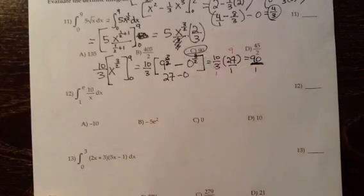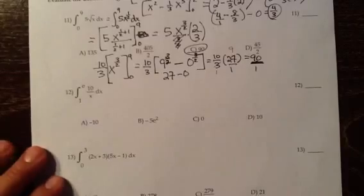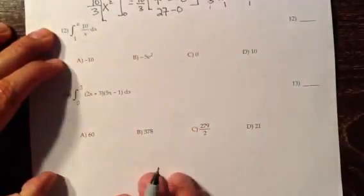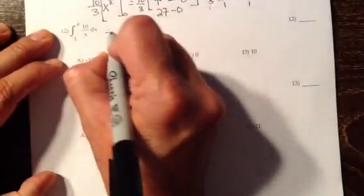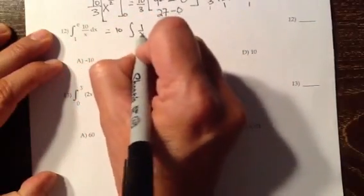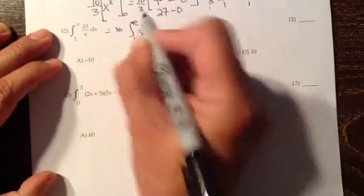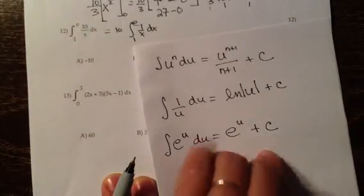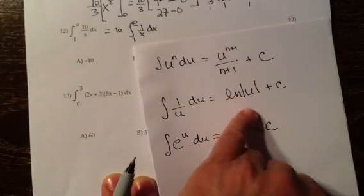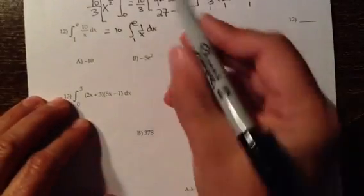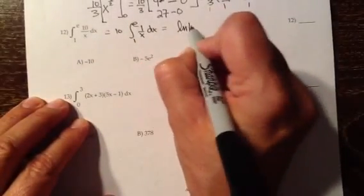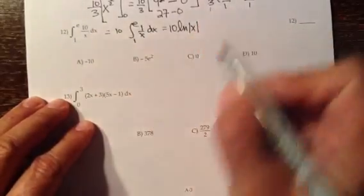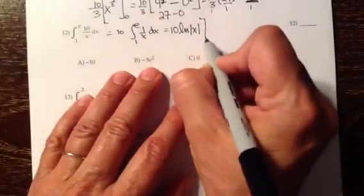So that answer choice is C. On number 12, constants can move to the front, and we're integrating a clean 1 over x dx. When you integrate 1/x dx, it's just the natural log of x — natural log absolute value of x, to be precise — with the 10 in front.